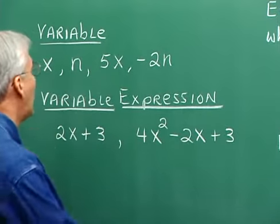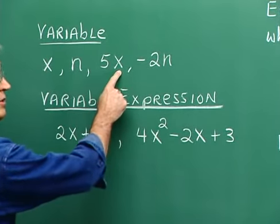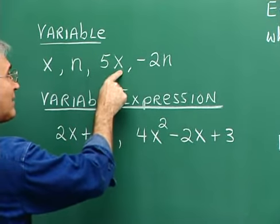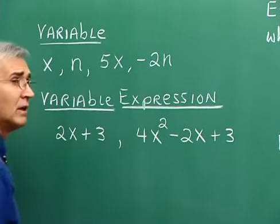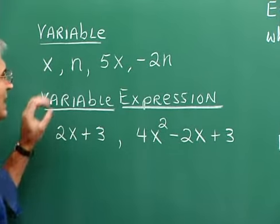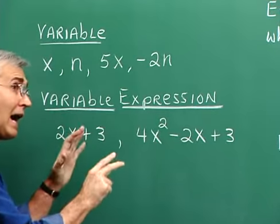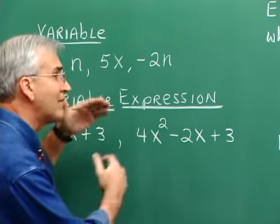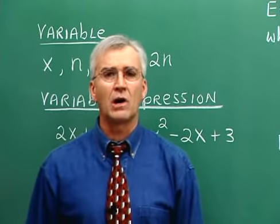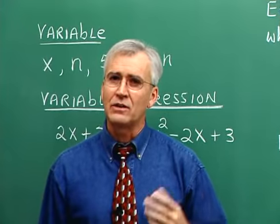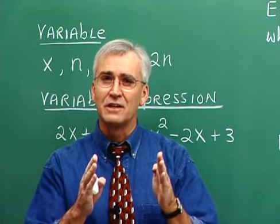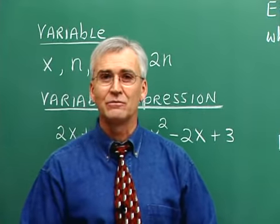This would be a variable term because if we don't know the value of X, then we can't possibly know the value of 5X. Until we're given the value of X, we don't know the value of 5X. And negative 2N is also a variable. If a number is standing alone, like 5, without a letter, then its value is known and 5 is the same value from problem to problem as a stand-alone number. Stand-alone numbers are called constants because they constantly have the same value.